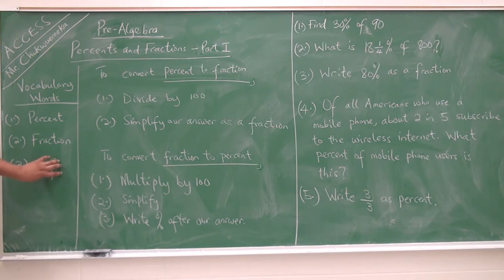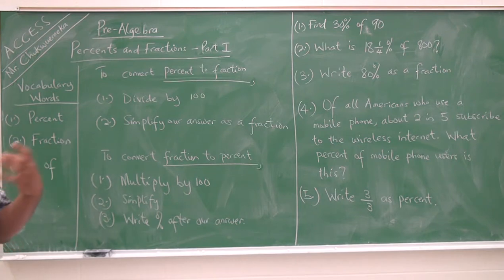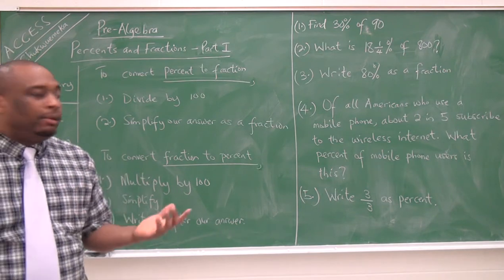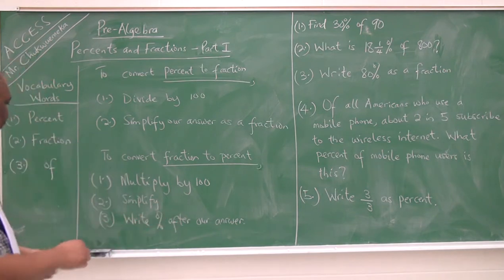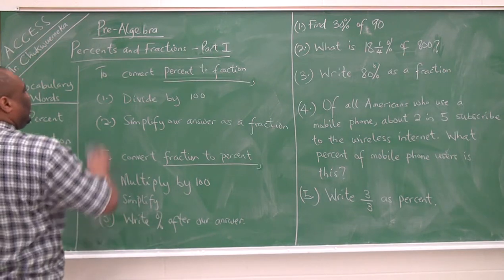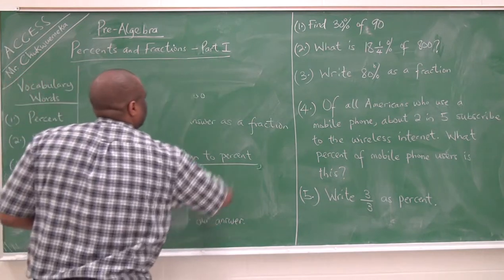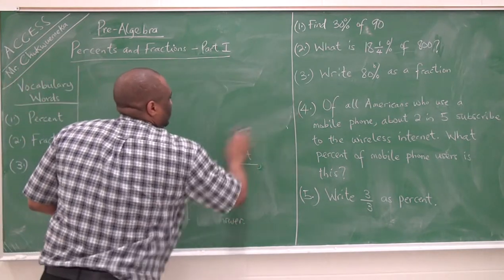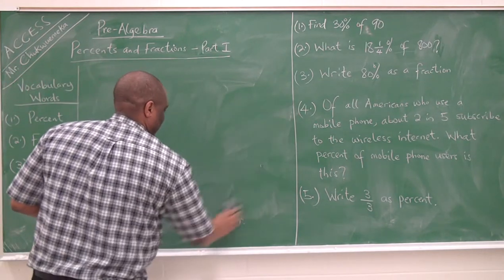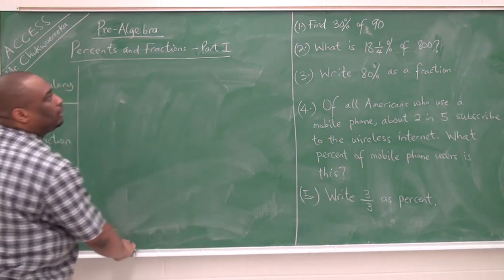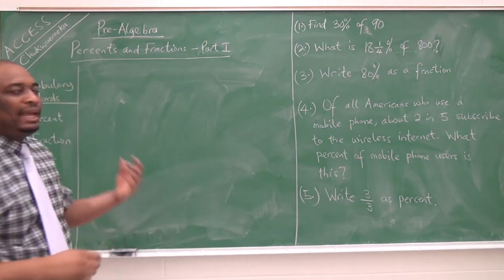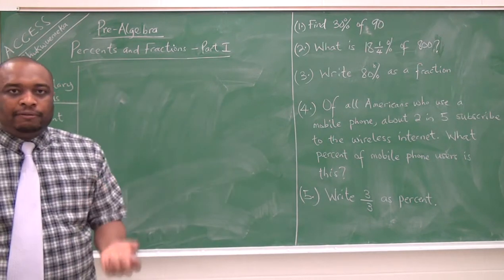When we see the word 'of', it simply means multiplication. Anytime you see that word 'of', it means multiplication. We can get started by solving the questions on the right-hand side. Question one: find 30% of 90.